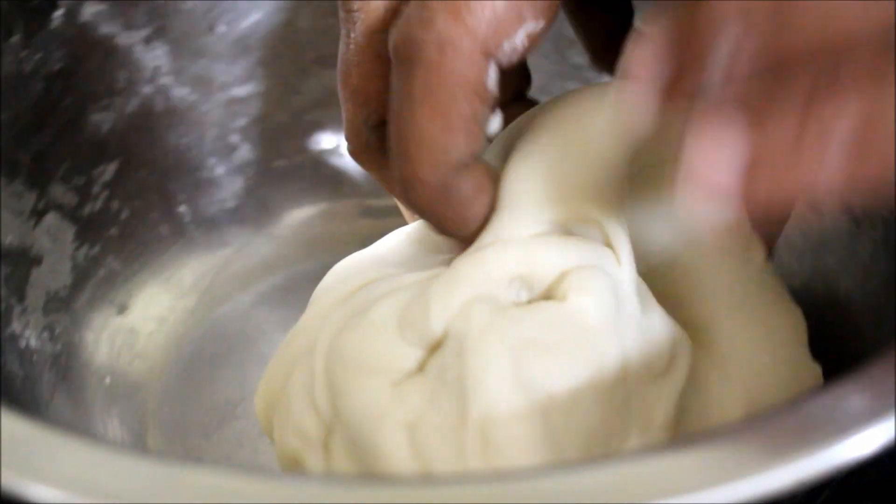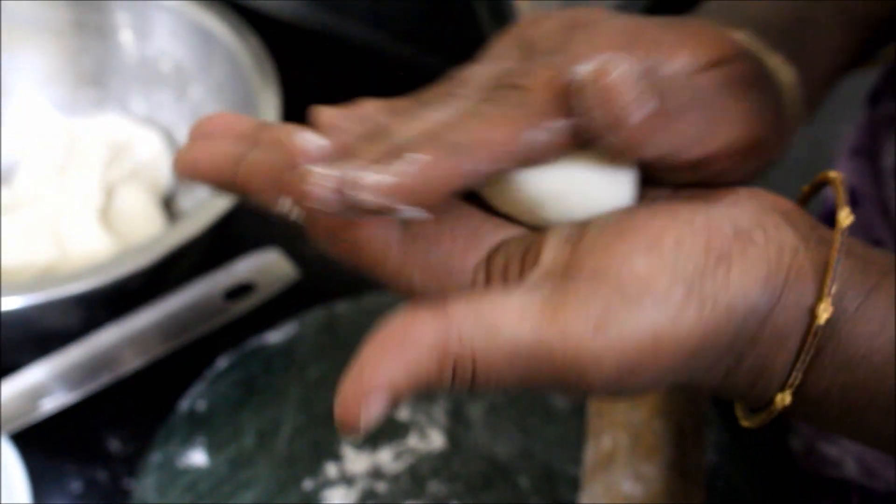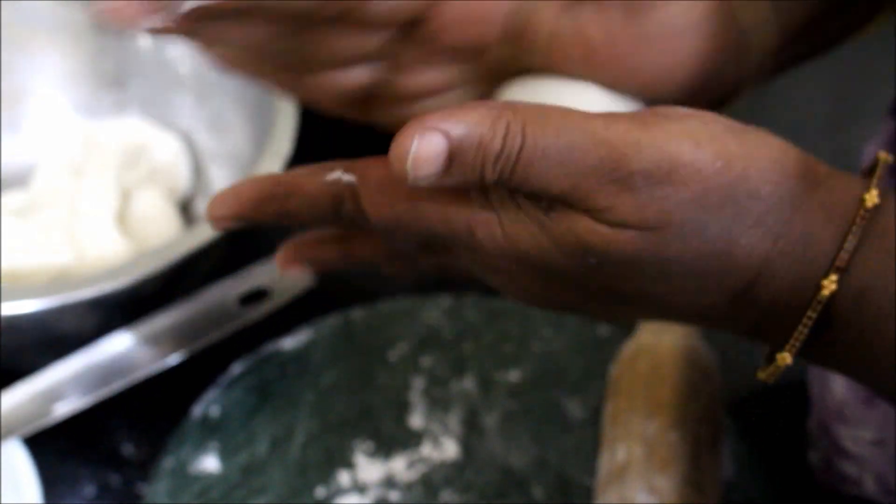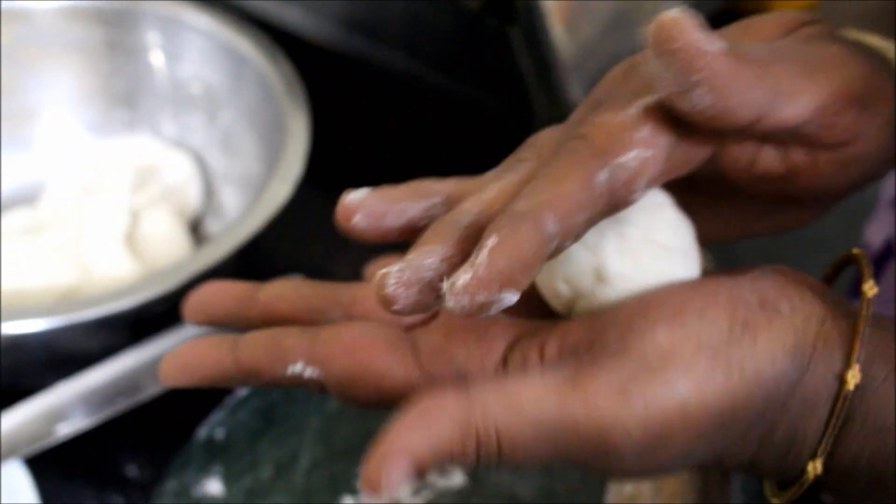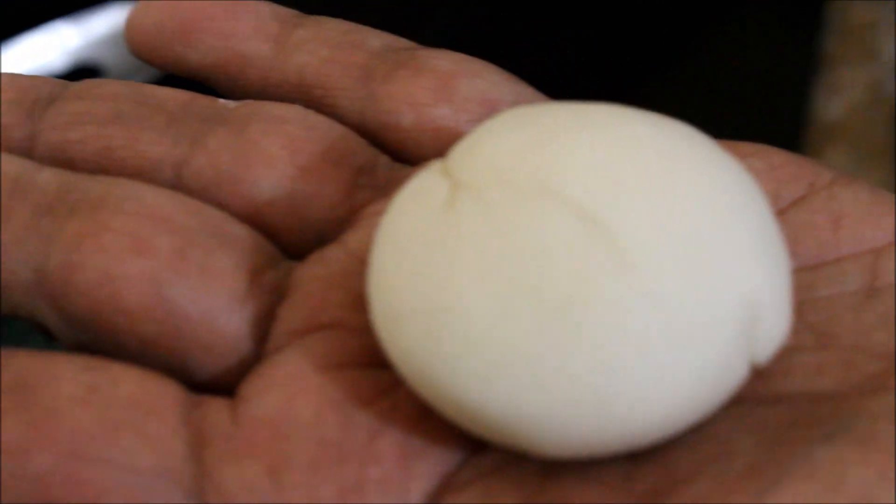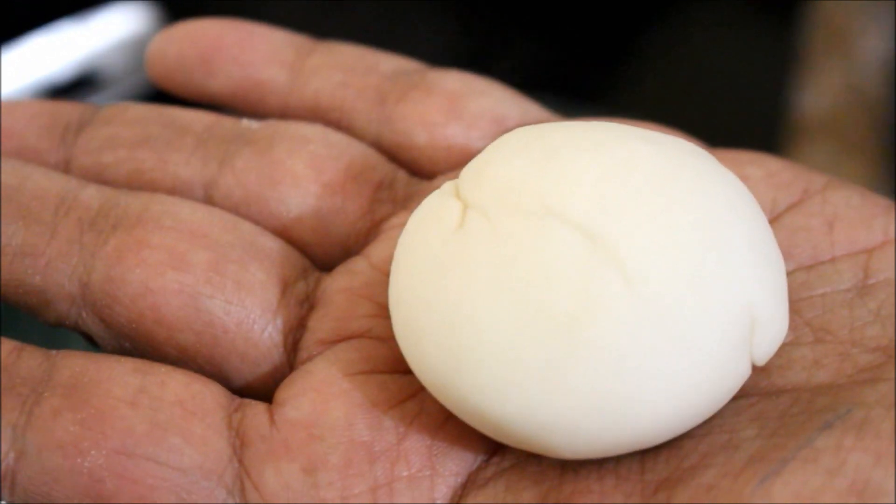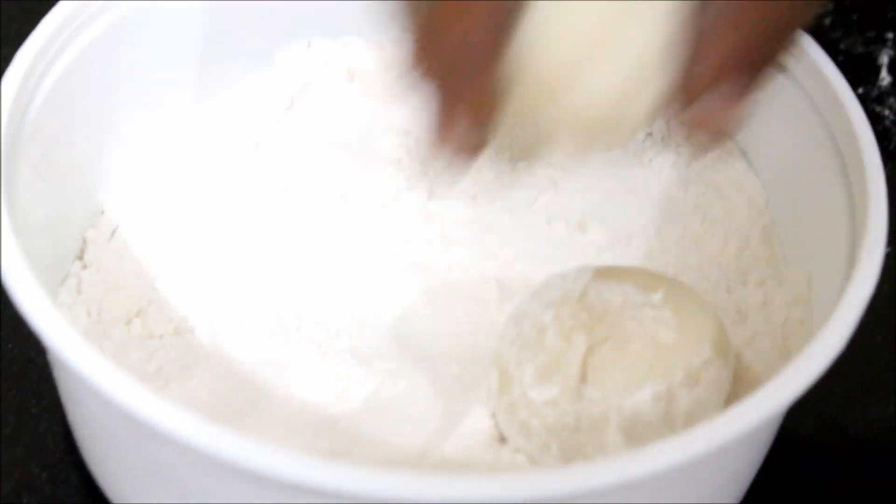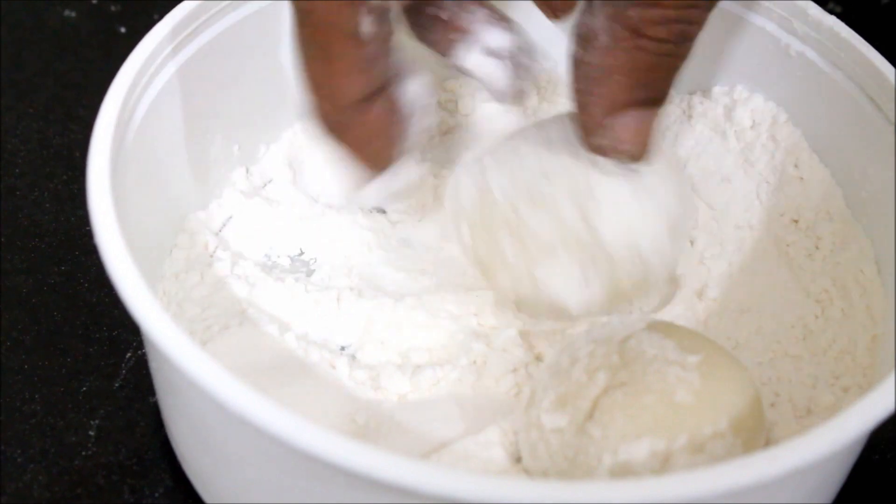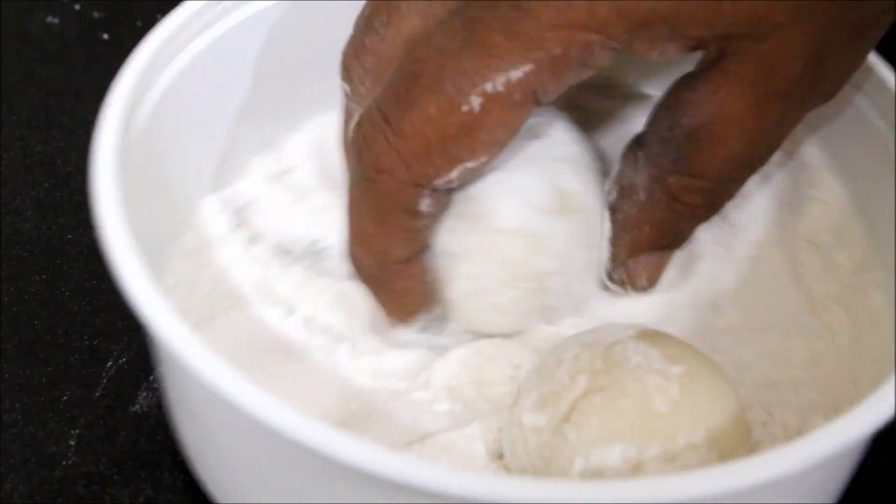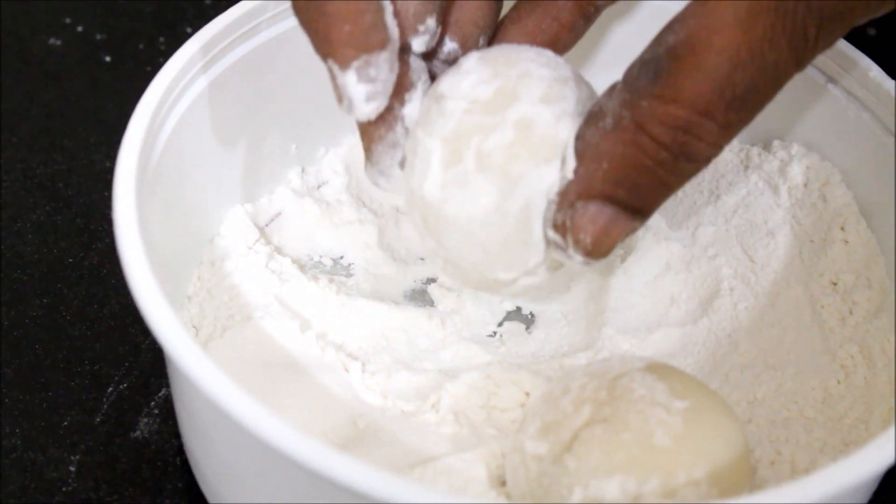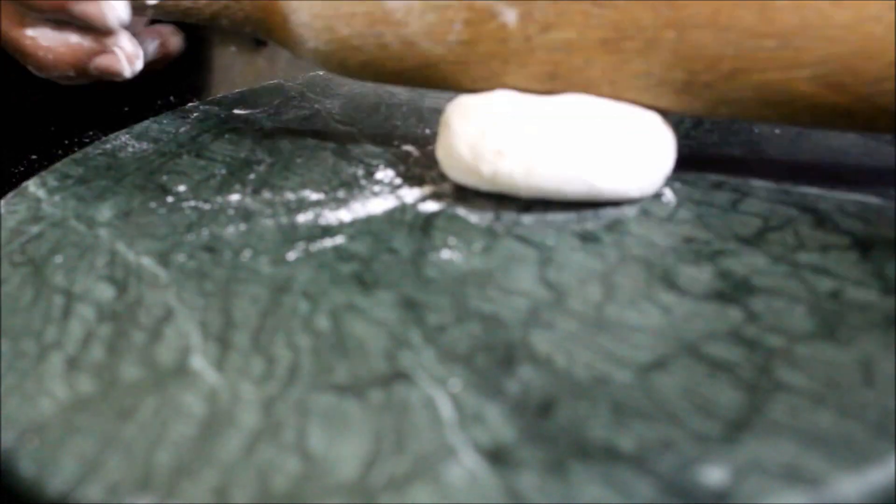Take a big lime size ball or a golf size ball of the dough. Roll it. Dip it in some flour. And now start preparing the rotis.